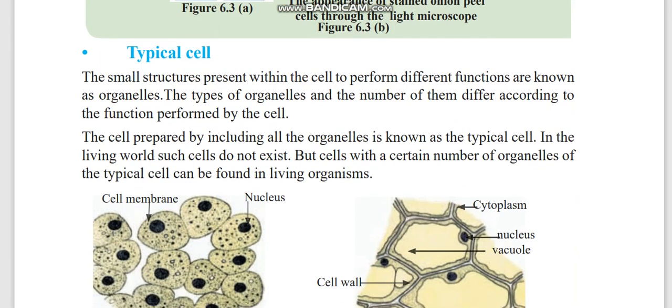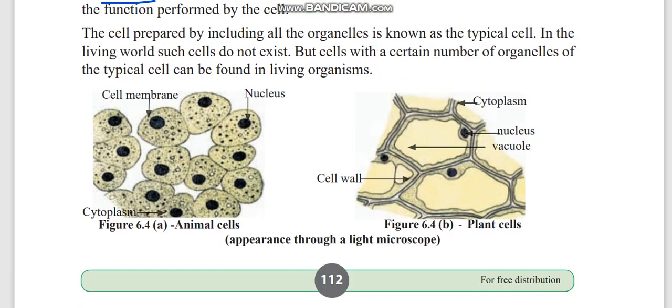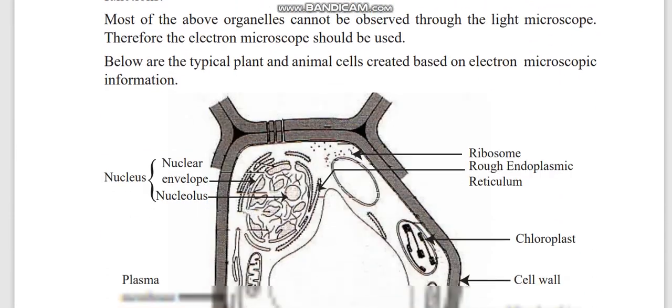In the cell there are small structures in order to perform particular functions. Those structures we call organelles. Organelles collectively in a cell we call it the typical cell. Here they have showed an animal cell and a plant cell. Animal cells have only one outer membrane but plant cells have two outer membranes.